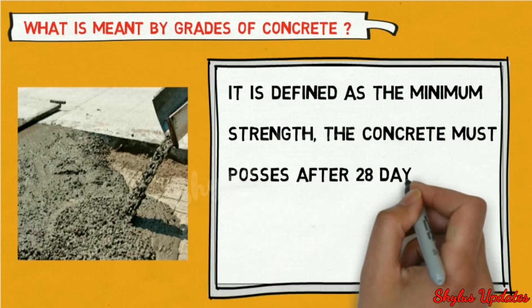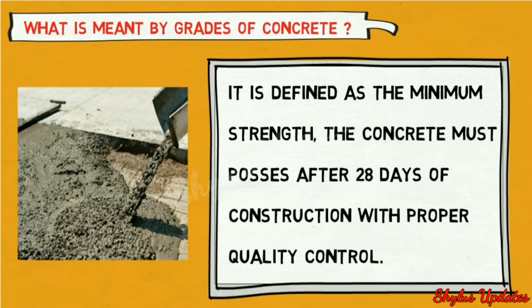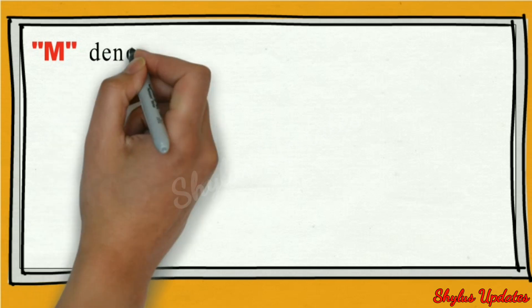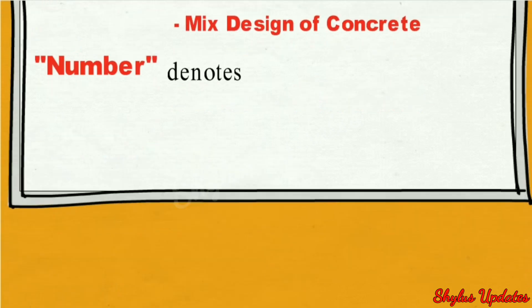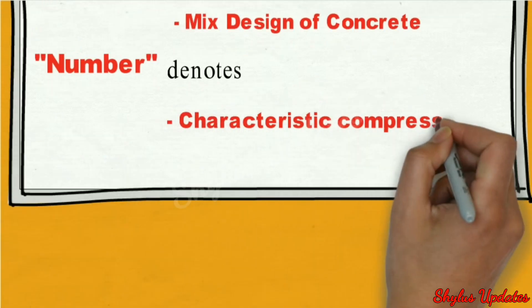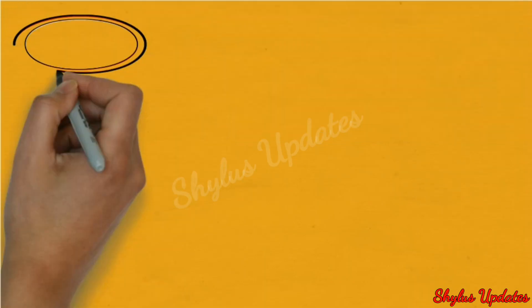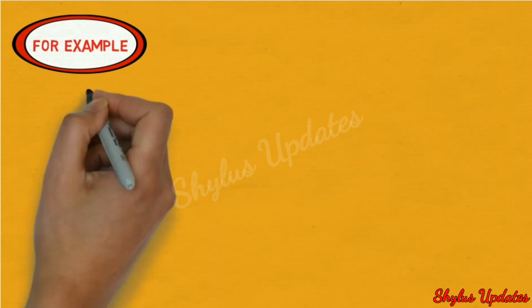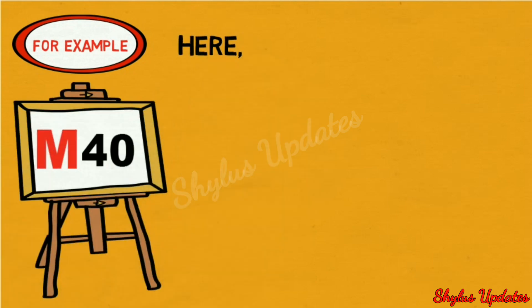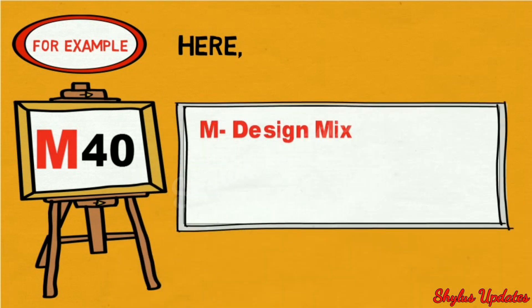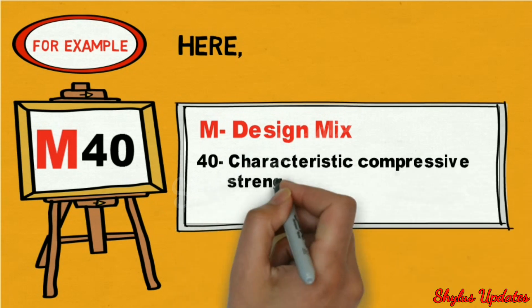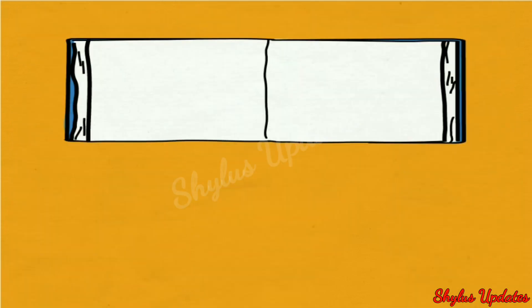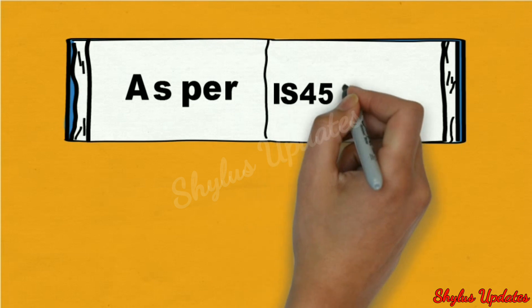Here 'M' denotes mix design of concrete and the number denotes characteristic compressive strength of concrete in Newton per mm square. For example, consider M40 — here 'M' denotes design mix and the number 40 denotes characteristic compressive strength of concrete in Newton per mm square, as per IS 456:2000.